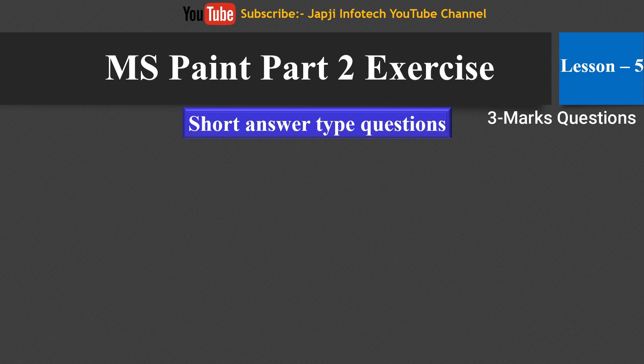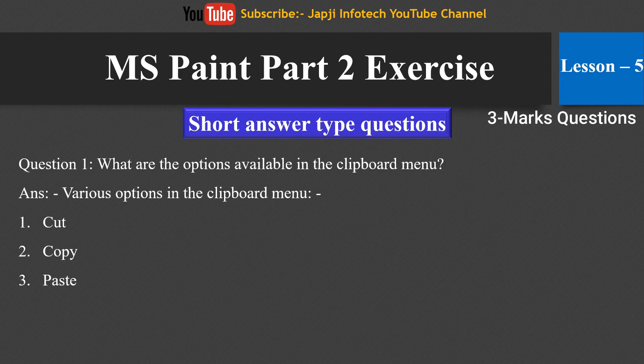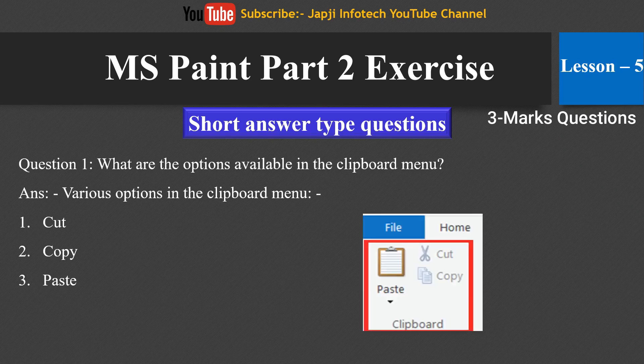Now we will learn about short answer type questions. The first question is: what are the options available in the clipboard menu? The various options in the clipboard menu are: first, cut; second, copy; and third, paste.